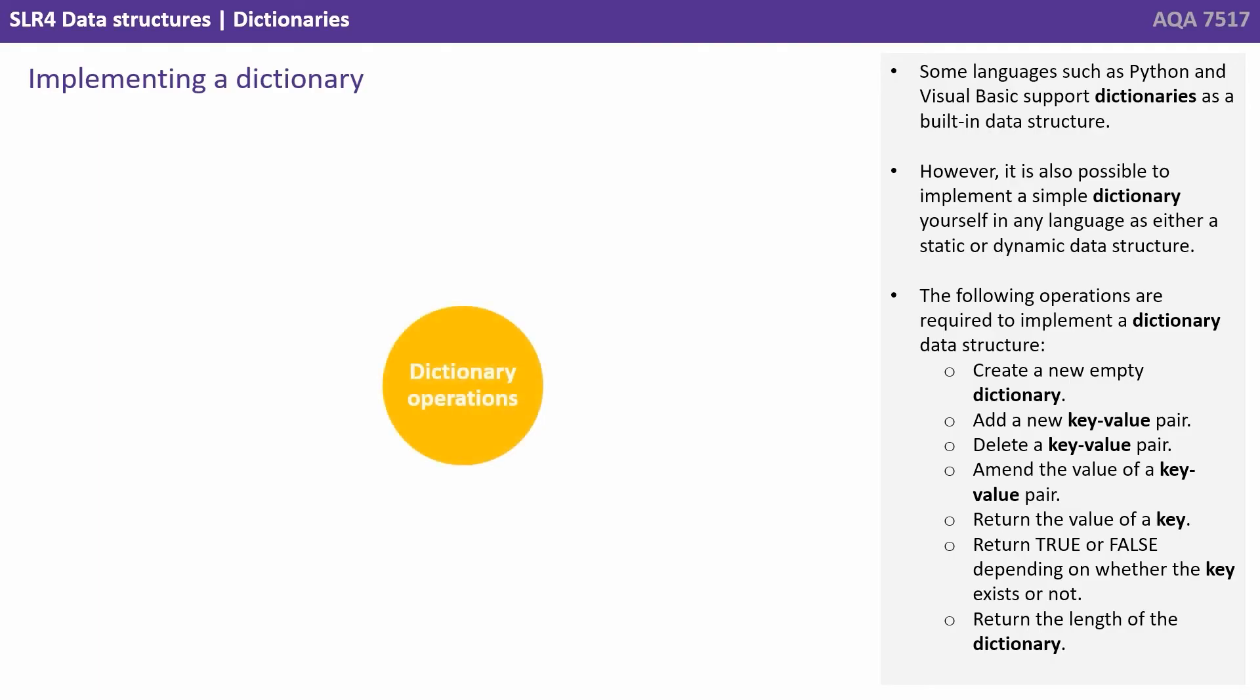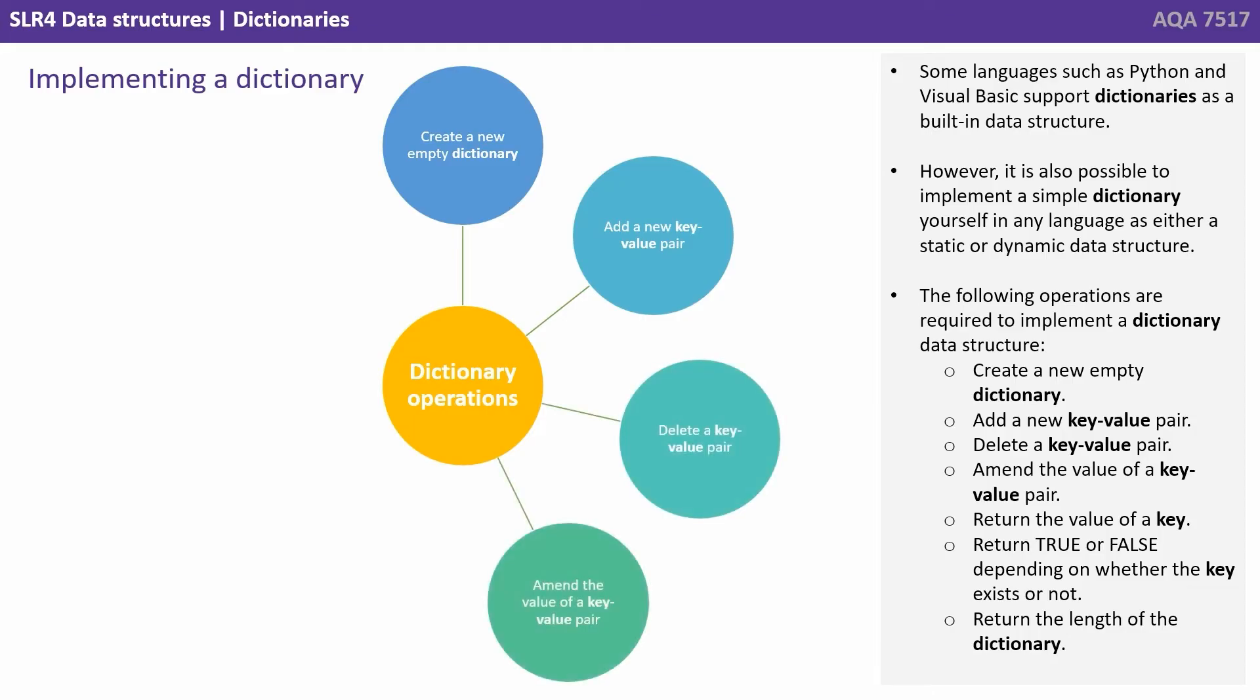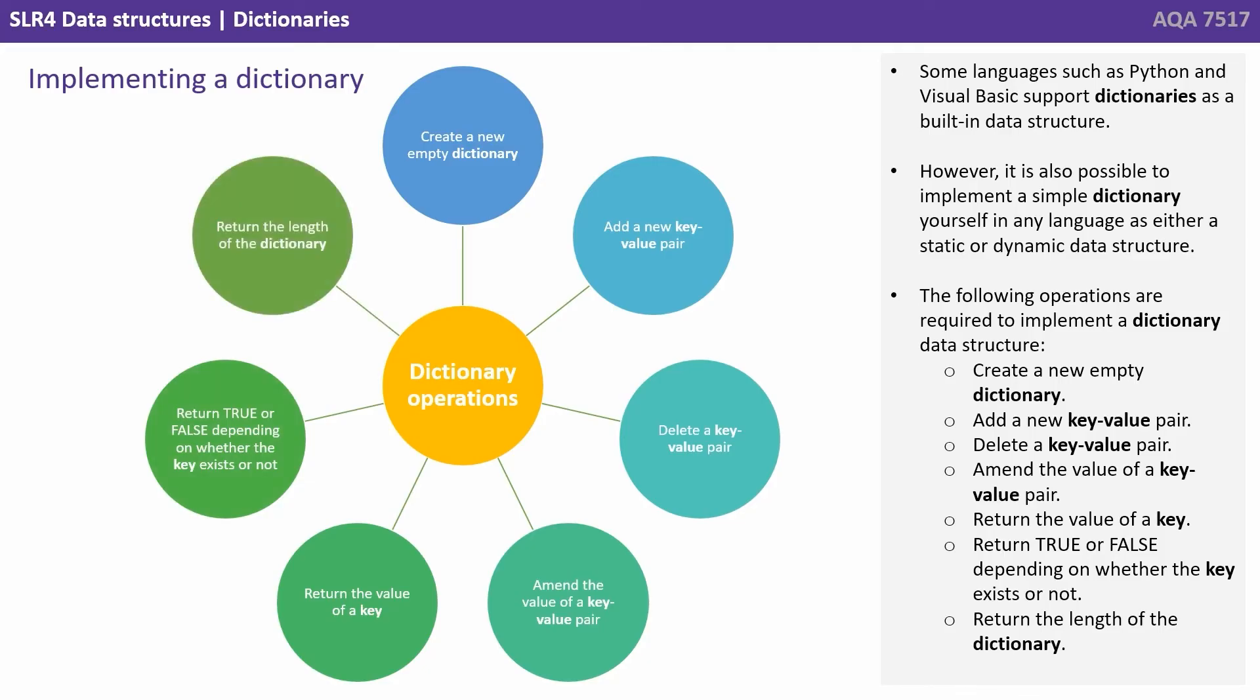The following operations are required to implement a dictionary data structure. We need to be able to create a new empty dictionary, add a new key-value pair, delete a key-value pair, amend the value of a key-value pair, return the value of a key, return true or false depending on whether the key exists or not, and return the length of the dictionary.